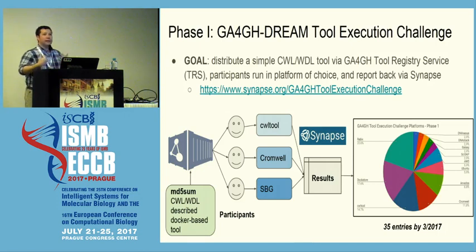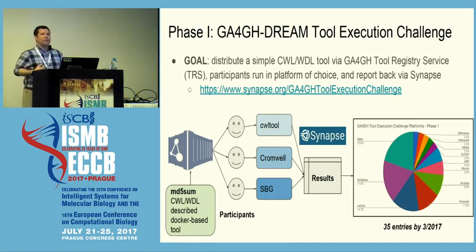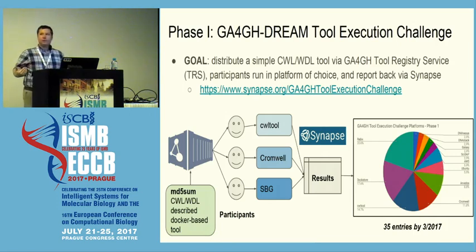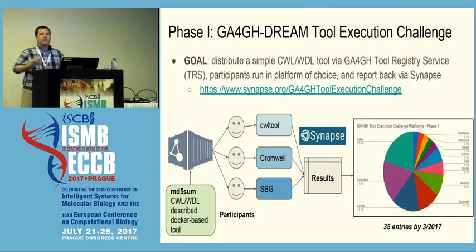The actual process was we put an MD5Sum tool — a very simple tool — on DocStore, and we had about 35 participants pull that from DocStore and run it in a wide variety of platforms. They self-reported success back to Synapse, and from that we were able to take a look at what platforms people were using. We saw a lot of people using Rabix, the simple DocStore command line tool, or CWL tool directly. For more information you can check out our Synapse page, but this was ultimately a very successful process — we were able to send around tools, share them, and have that be reproducible.